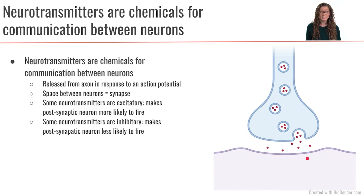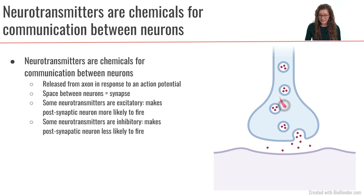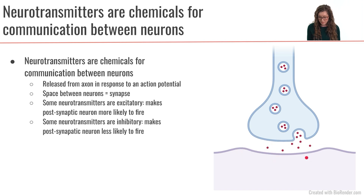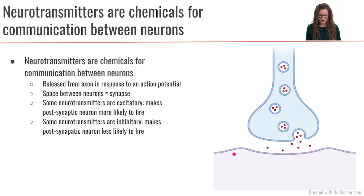So the presynaptic neuron has sent an action potential down its axon. And as that action potential arrives at the tip of the axon, it's going to release these chemicals — these neurotransmitters — and it's going to spit out a whole bunch of neurotransmitters into this synapse. And those neurotransmitters are then going to go and bind to receptors on the postsynaptic neuron, and that is going to cause some changes and cause signaling to happen within this postsynaptic neuron.